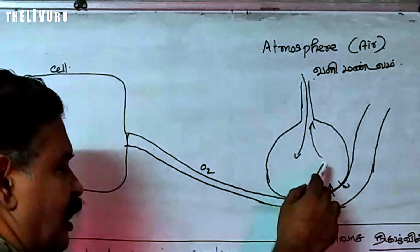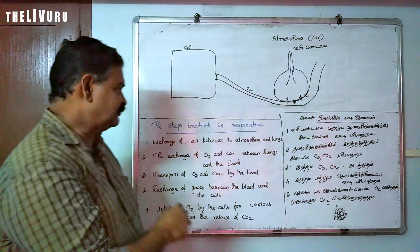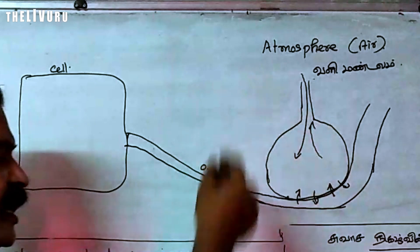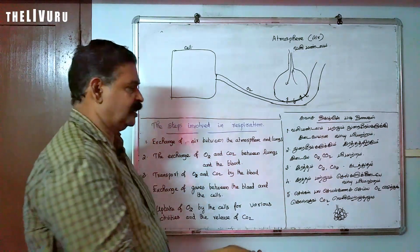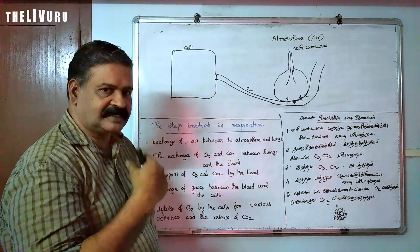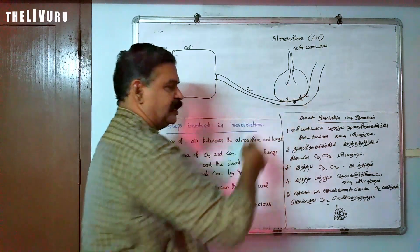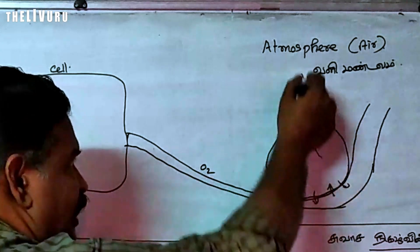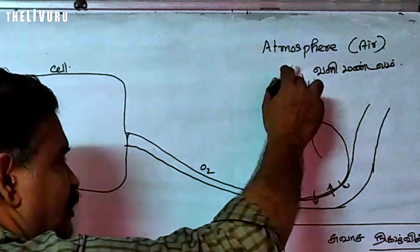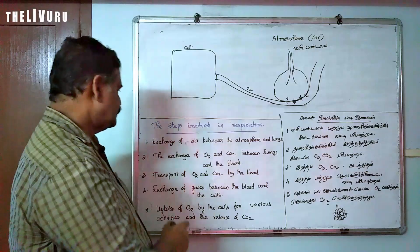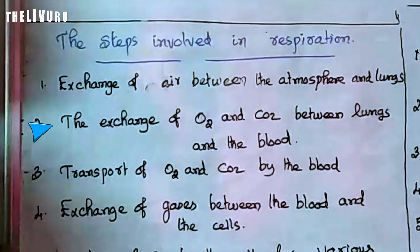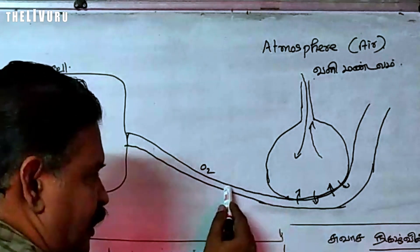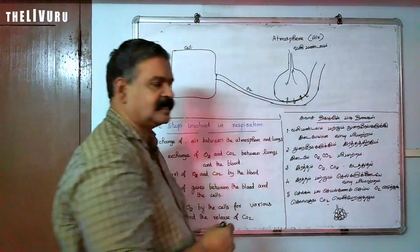The exchange of air between the atmosphere and the lungs will be very important. That is, oxygen will be taken in and carbon dioxide will be removed. The second step is the exchange of oxygen and carbon dioxide between the lungs and the blood.